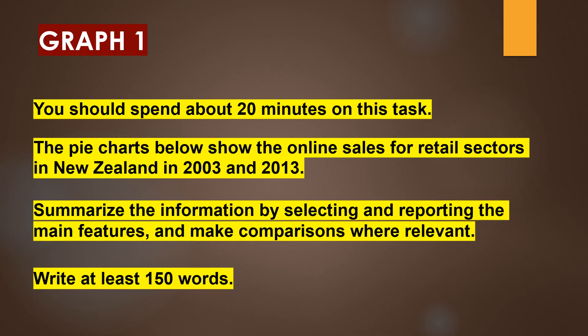Let's take a look at a recent exam question. Graph 1: the pie charts below show the online sales for retail sectors in New Zealand in 2003 and 2013. Summarize the information by selecting and reporting the main features and make comparisons where relevant. Write at least 150 words.